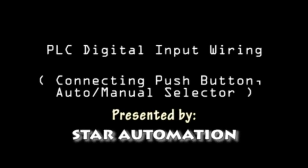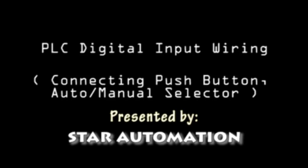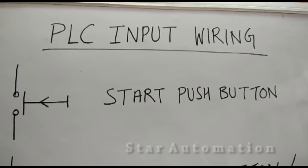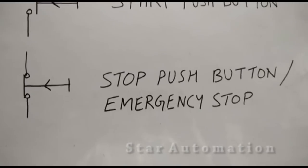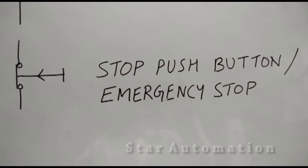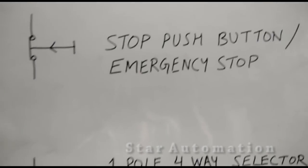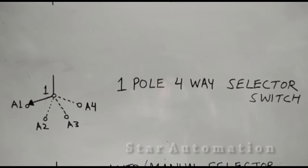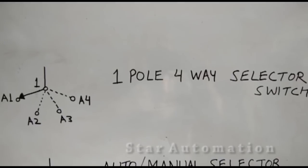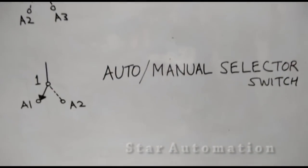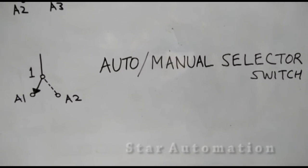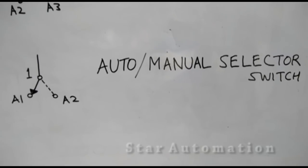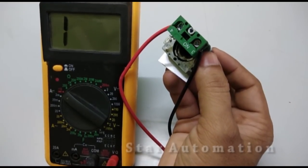PLC digital input wiring: connecting push button, auto/manual selector switch to the PLC input terminals. The start push button is a normally open contact, and the stop/emergency stop push button is a normally closed contact. A one-pole four-way selector switch has one pole and four outgoings: A1, A2, A3, A4. The auto/manual selector switch has one pole and two outputs — one for auto and one for manual.